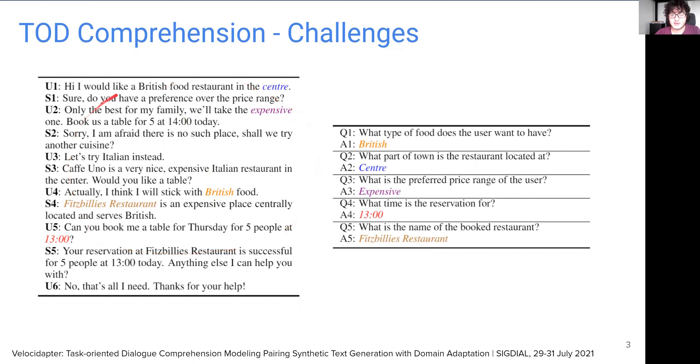On the left, we have a customer service dialogue from restaurant booking domain, where each slot such as restaurant area and price range are colored. On the right, we have questions annotated for each slot and their respective slot values. Now, by matching these questions to every dialogue in such a dataset, we can come up with a large dialogue comprehension dataset.